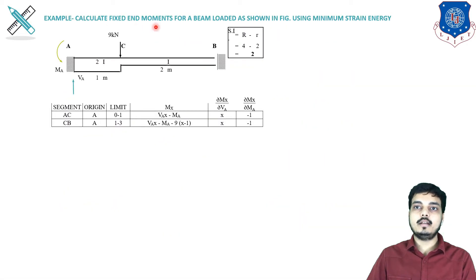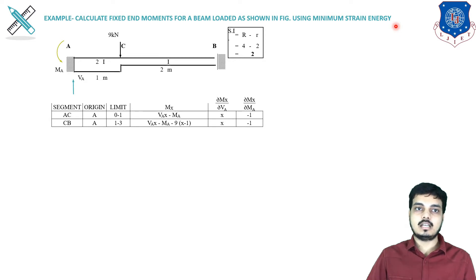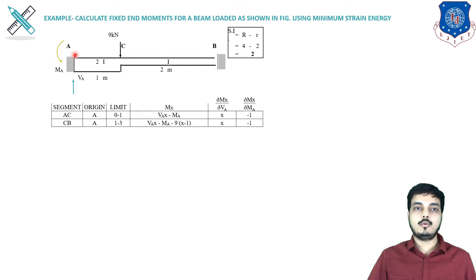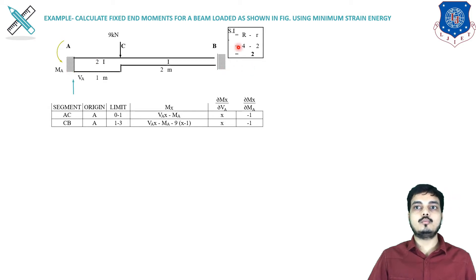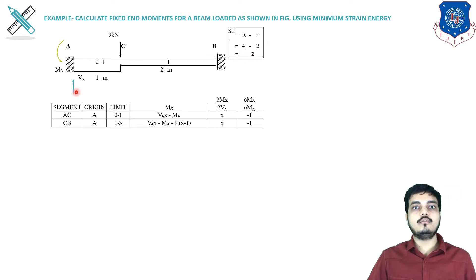Calculate fixed end moment for a beam loaded as shown in figure using minimum strain energy. Minimum strain energy is nothing but Castigliano's second theorem. The figure shows support A as a fixed support and support B also as a fixed support. A 9 kN load is given at point C which is 1 meter from point A. First we will be finding our degree of indeterminacy — 2 plus 2 is 4, minus 2 gives us 2 unknowns. So we took VA and MA as our primary unknowns.